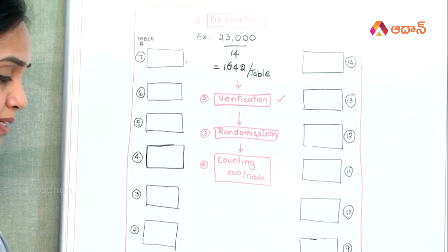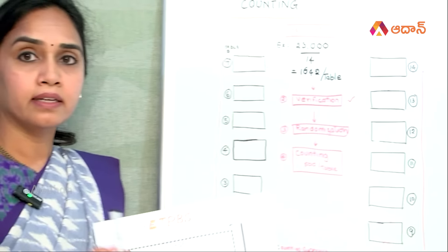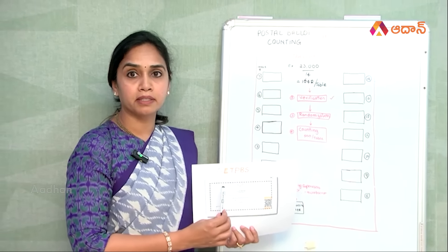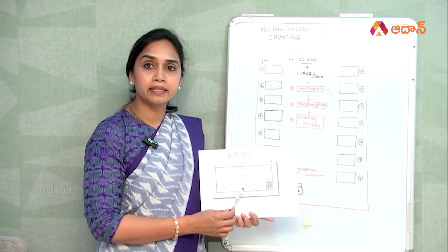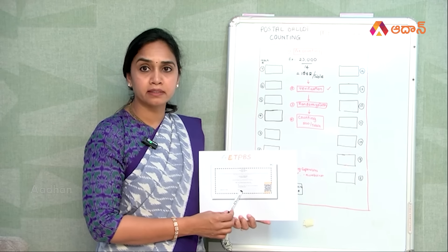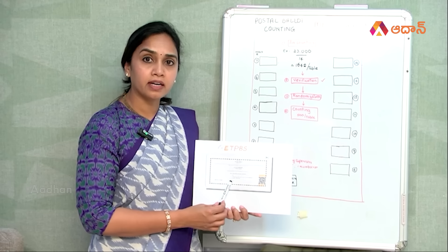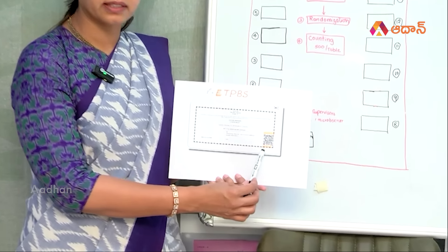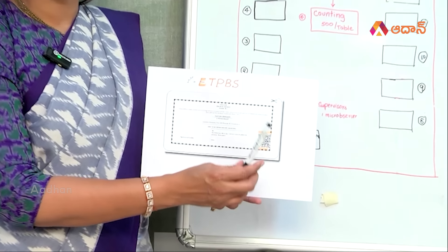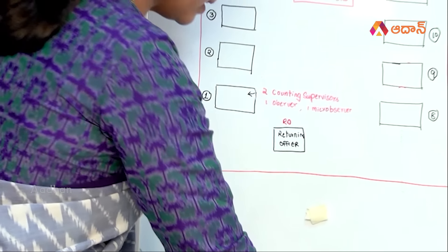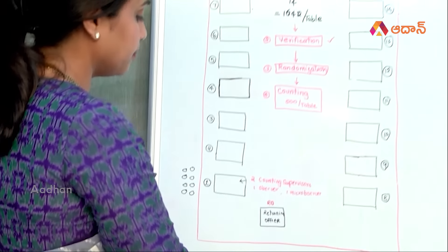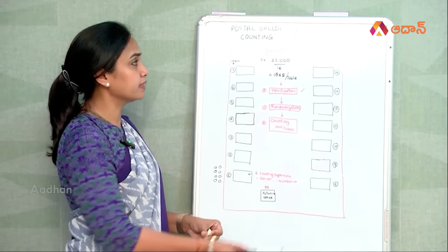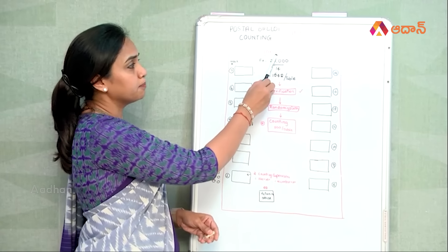First, ETPBS — Electronically Transferred Postal Ballot System. This is the main part for the military and paramilitary, and they are the first to start. They are doing the first QR code scan. Then the process is going to be pre-counting.